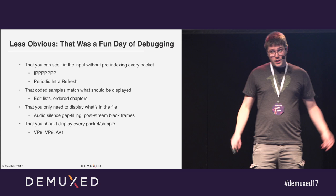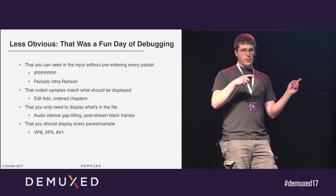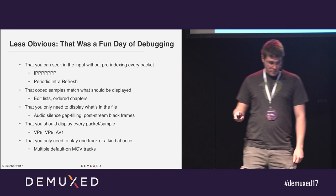VP8, VP9, AV1 — in what I like to call 'I can't believe it's not B-frames' — they have invisible frames, which are coded and can be referenced by other frames but are not displayed. If you're trying to index a file and seek around, that's a big pain, because they're also not flagged in the container, generally.